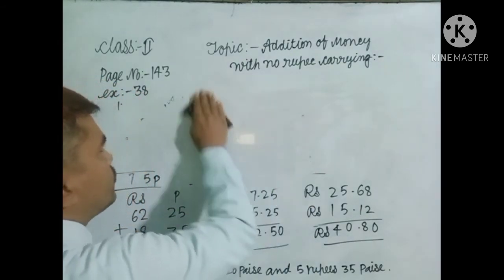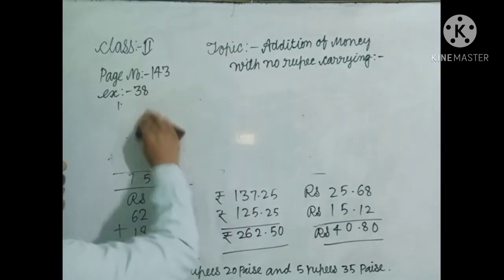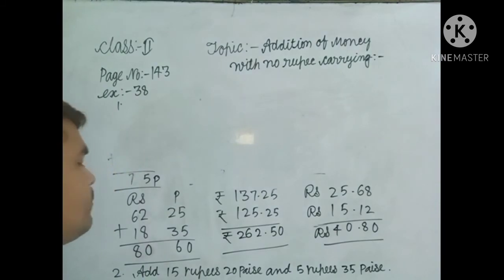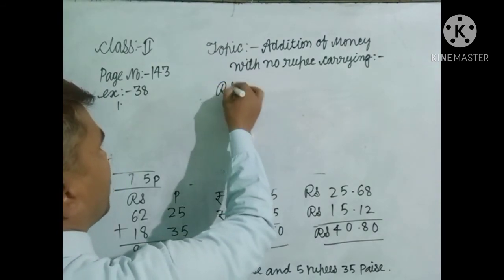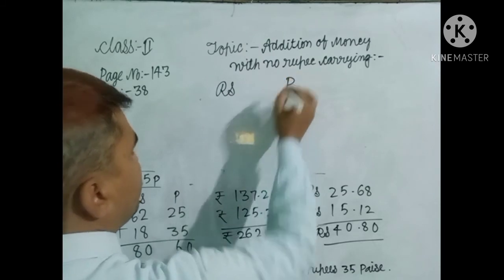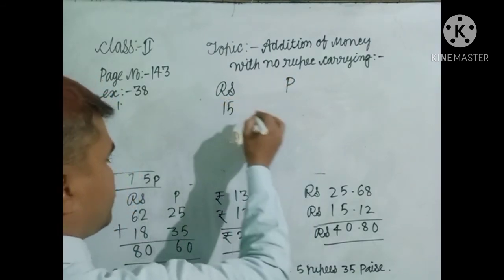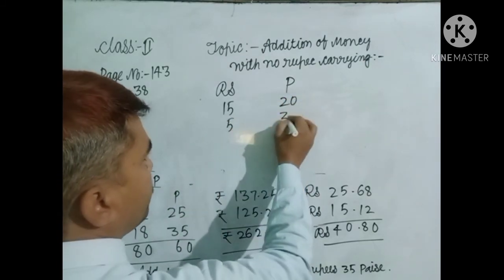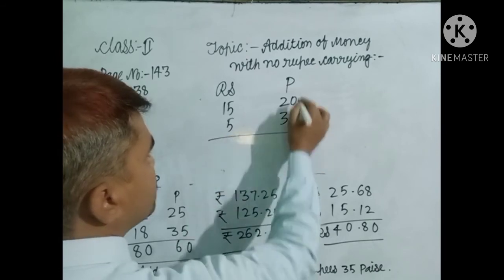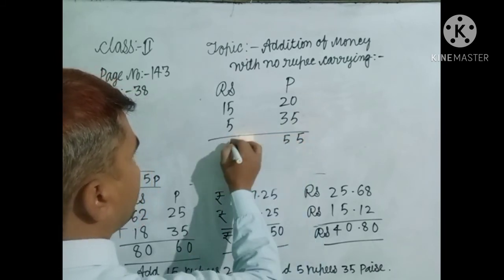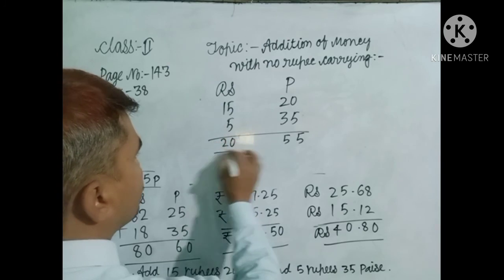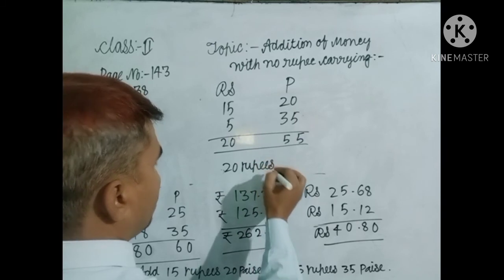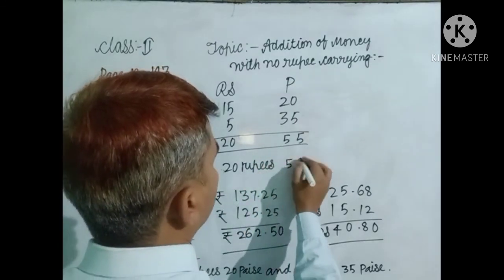In question number 2, add 15 rupees 20 paise and 5 rupees 35 paise. So dear students must you write here. Here Rs. and here paise. That means 15 rupees 20 paise and 5 rupees 35 paise. In this way you write down here 5, here 5, here 10, here 2. That means 20 rupees, 20 rupees 55 paise.